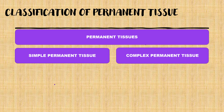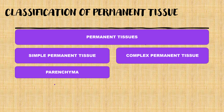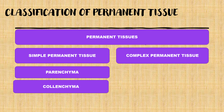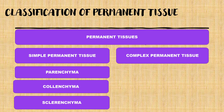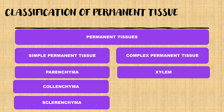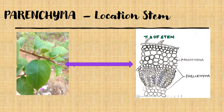Simple permanent tissues are made up of similar kinds of cells, so they are described as homogeneous. They are of three types: parenchyma, colenchyma, and sclerenchyma. Complex permanent tissues are made up of different kinds of cells and are of two types: xylem and phloem. We will discuss simple permanent tissue in this video, starting with parenchyma.